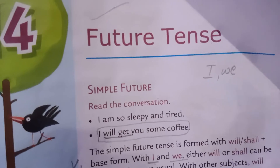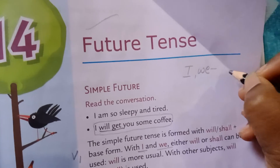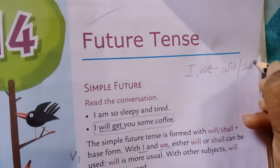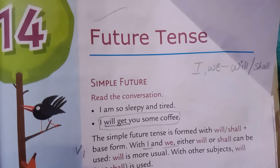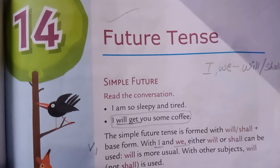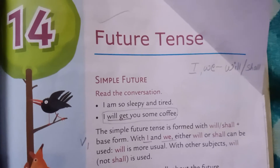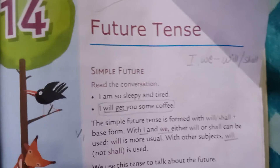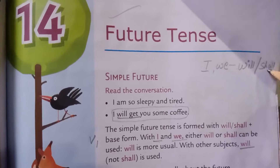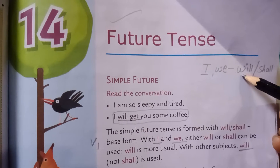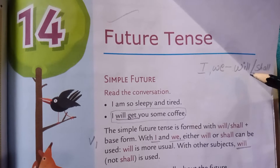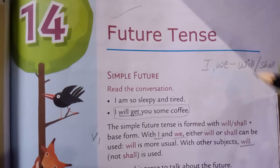Remember students: if 'I' or 'we' is the subject, we can use will or shall. For all other subjects — whether it is a name, he, she, it, you, or they — we will be using 'will.' So apart from 'I' and 'we,' for all the rest of the subjects we will be using 'will.' Is it clear?